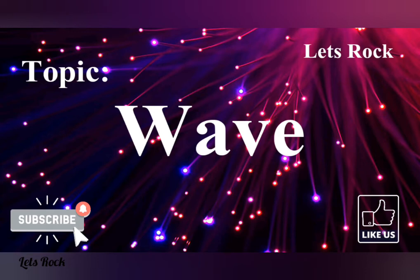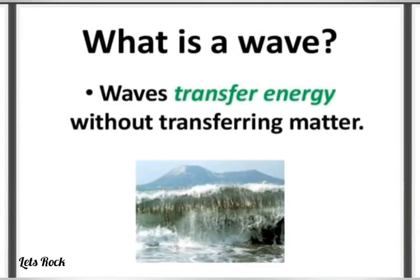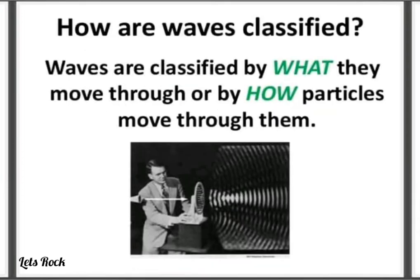What is a wave? A vibration or disturbance in space. Waves transfer energy without transferring matter. How are waves classified? Waves are classified by what they move through or by how particles move through them.